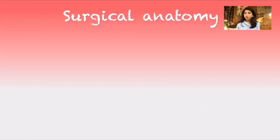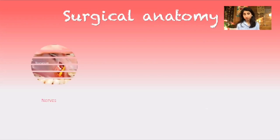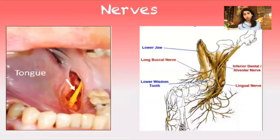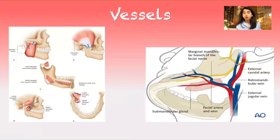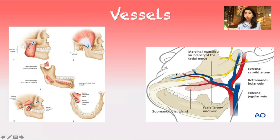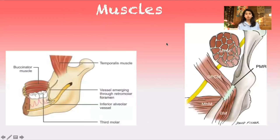Before we jump into the incisions and flap designs, we should briefly review the surgical anatomy of this area. For the nerves, we have the lingual nerve that passes distally to the impacted lower third molar. For the vessels, we have the facial artery and facial vein that pass in proximity with the second molar, and the mandibular branches which supply the temporalis tendon. For the muscles, the vestibule is formed by the buccinator muscle buccally and the mylohyoid muscle lingually.